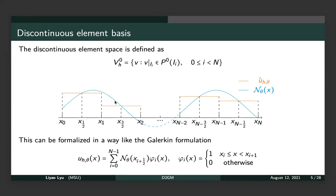Similar to the finite volume method or discontinuous Galerkin method, we introduce discontinuous element basis functions. Taking a one-dimensional figure as an example, for each cell from x_i to x_{i+1} we use a piecewise constant basis. We take the value of the neural network at the midpoint as the coefficient of the basis. The solution can be formalized as u_h(theta, x) equals a summation over all cells of theta(x_{i+1/2}) times phi(x), where phi(x) is the basis function. This is piecewise constant; piecewise linear will be discussed afterwards.